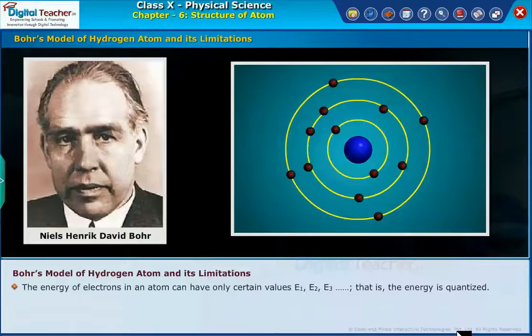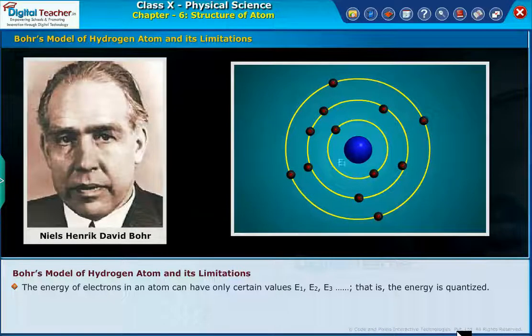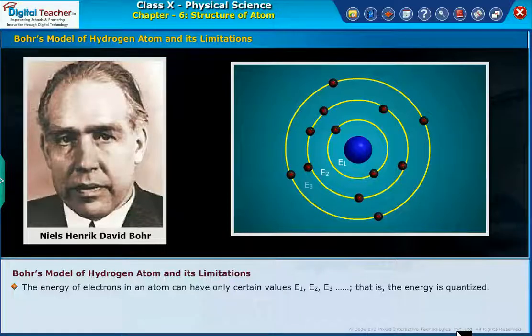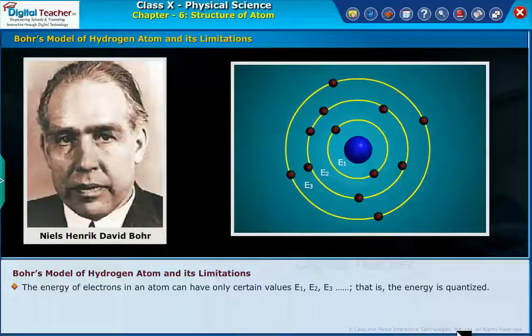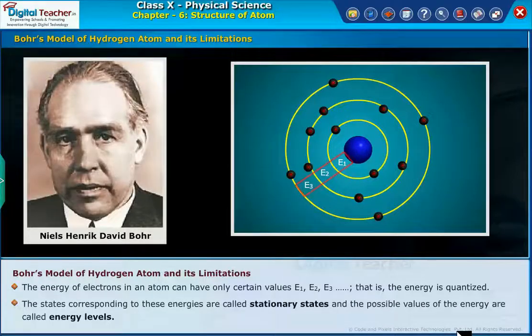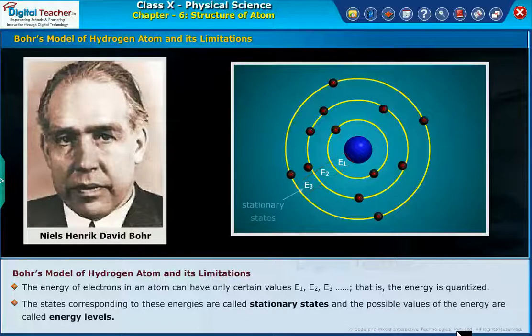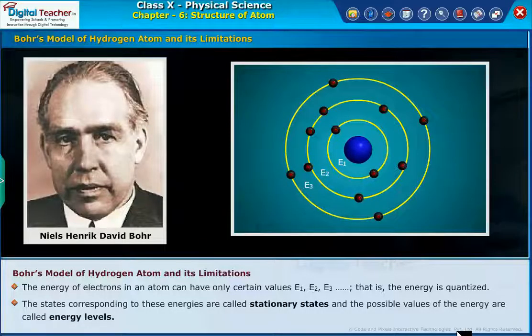The energy of electrons in an atom can have only certain values: E1, E2, E3. That is, the energy is quantized. The states corresponding to these energies are called stationary states and the possible values of the energy are called energy levels.